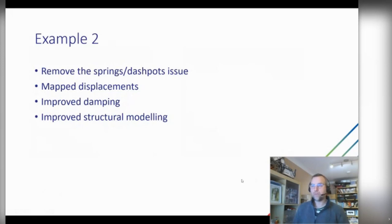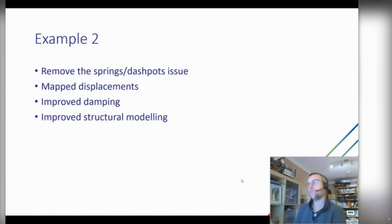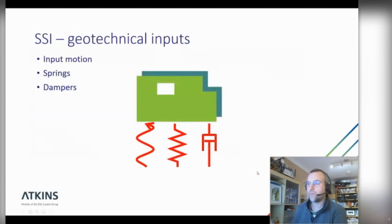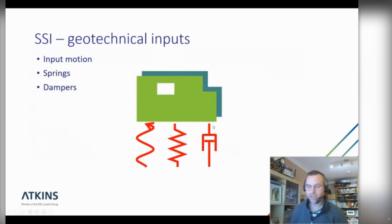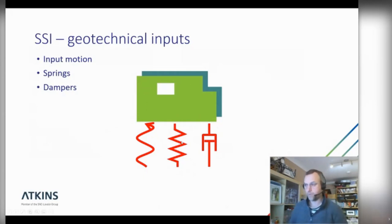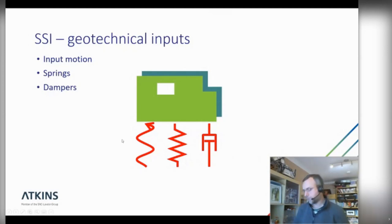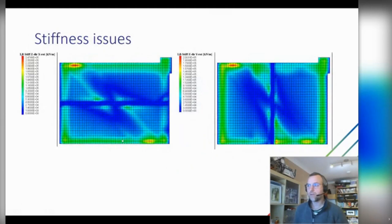The second example removes the issue of springs and dashpots by using mapped displacements, while also improving damping and structural modelling. Historically we have undertaken geotechnical analyses with a ground model to various degrees of complexity, obtaining spring values and damping values from the base of the structure to feed into the structural analysis. But there are problems with this.